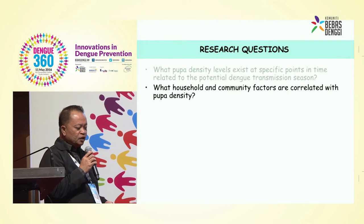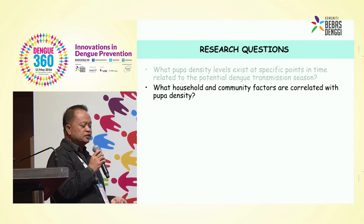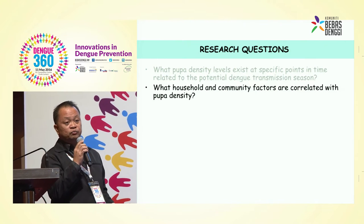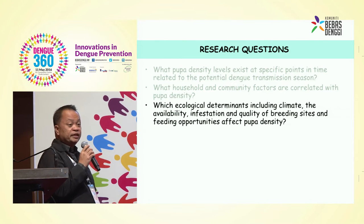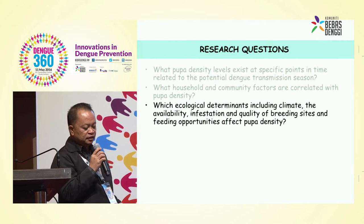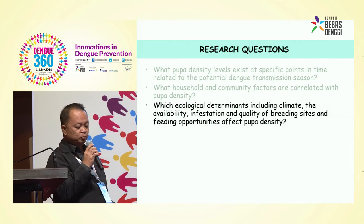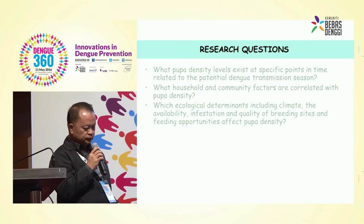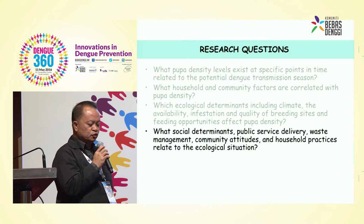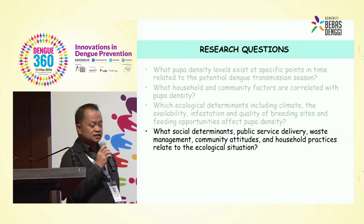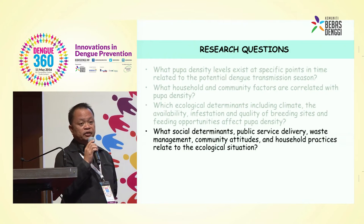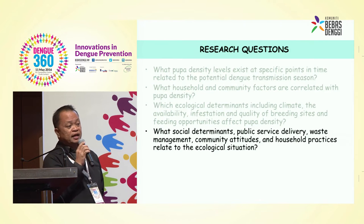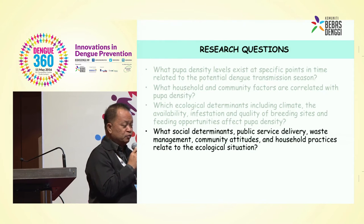A set of other determinants includes what household and community factors are correlated with pupal density. This goes with ecological determinants including climate, availability, infestation, and quality of breeding sites and feeding opportunities that affect pupal density. And what social determinants such as public service delivery, waste management, community attitudes, and household practices would relate to the ecological situation that would help improve control of dengue in Muntinlupa City.